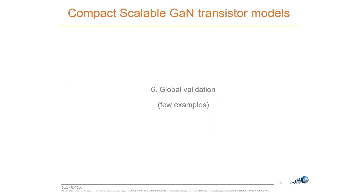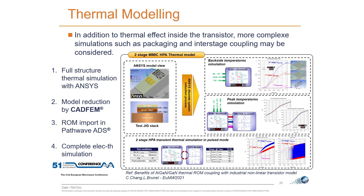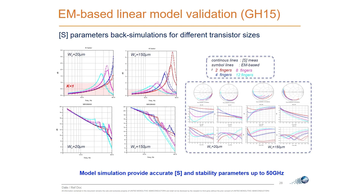For global validation, some examples: S-parameter measurement is very important. We show the evolution of the K-factor with different topologies — two, four, and eight fingers — versus frequency, for different unitary gate widths of 20 and 100 micrometers. This is important in order to calculate the transition MSG/MAG, because on GH15 we want to use transistors not at 20 or 30 GHz but at 40, 42, and even up to 45 GHz. We have really good agreement between measurement and simulation.